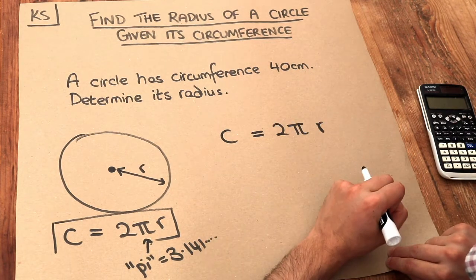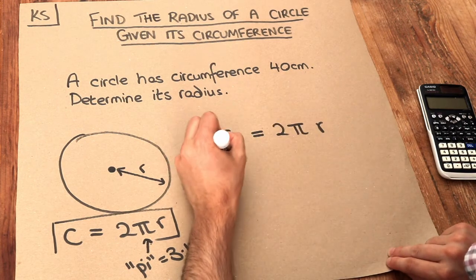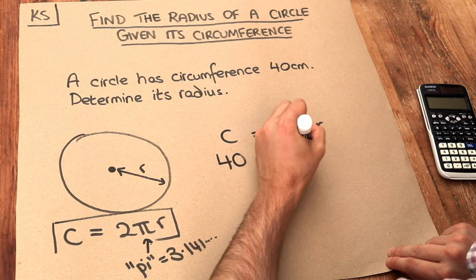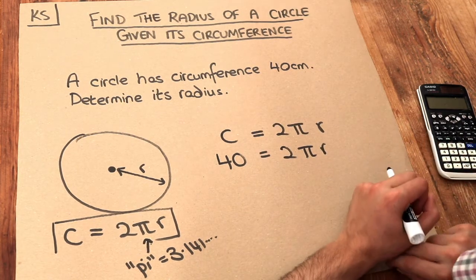So let's just shove in what we know. Let's substitute the numbers in. We're told that the circumference is 40 centimeters. So let's just put that in. 40 = 2πR. And it's the radius we don't know this time, so we have to solve this equation.